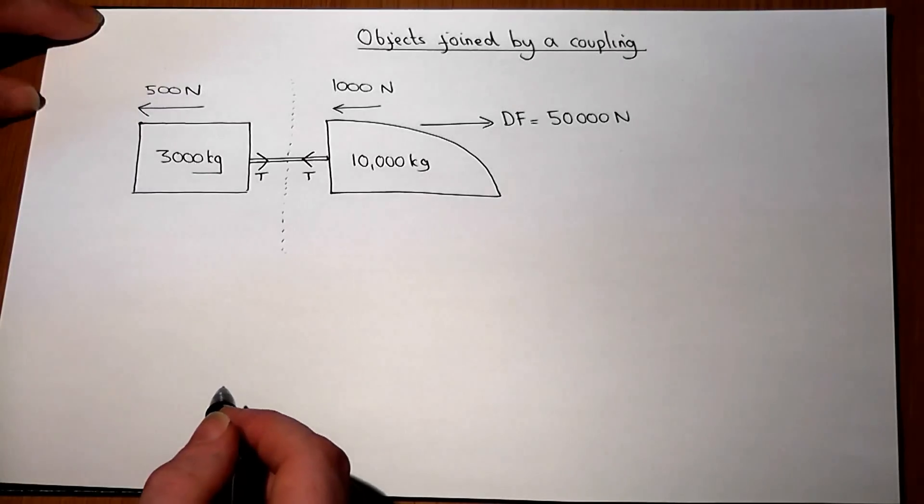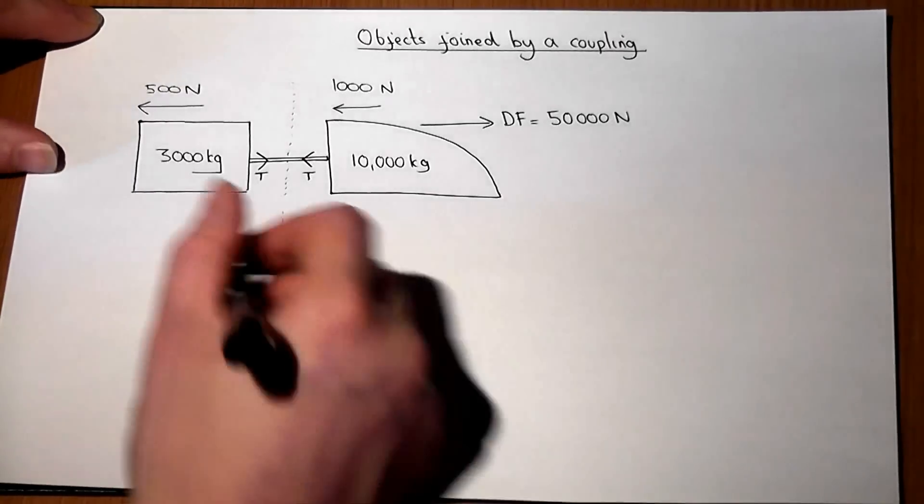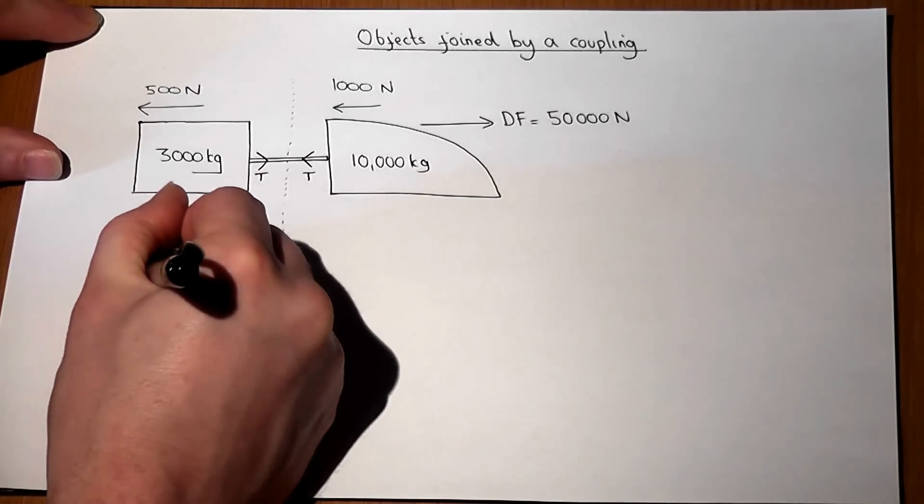Now we can therefore write down two equations of motion, one for the engine and one for the trailer.